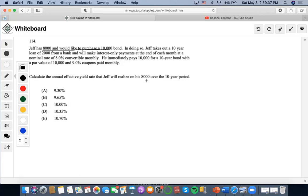The first thing that we have to notice is that since Jeff takes out a 10-year loan of $2,000 from a bank and he will make interest-only payments at the end of each month at a nominal rate of 8% convertible monthly, the conventional thing is to always multiply the effective interest rate by the loan to find the amount of interest-only payments that he's going to make. So we're going to do 2,000 times 8% convertible monthly. What is 8% convertible monthly? It is 0.6666%.